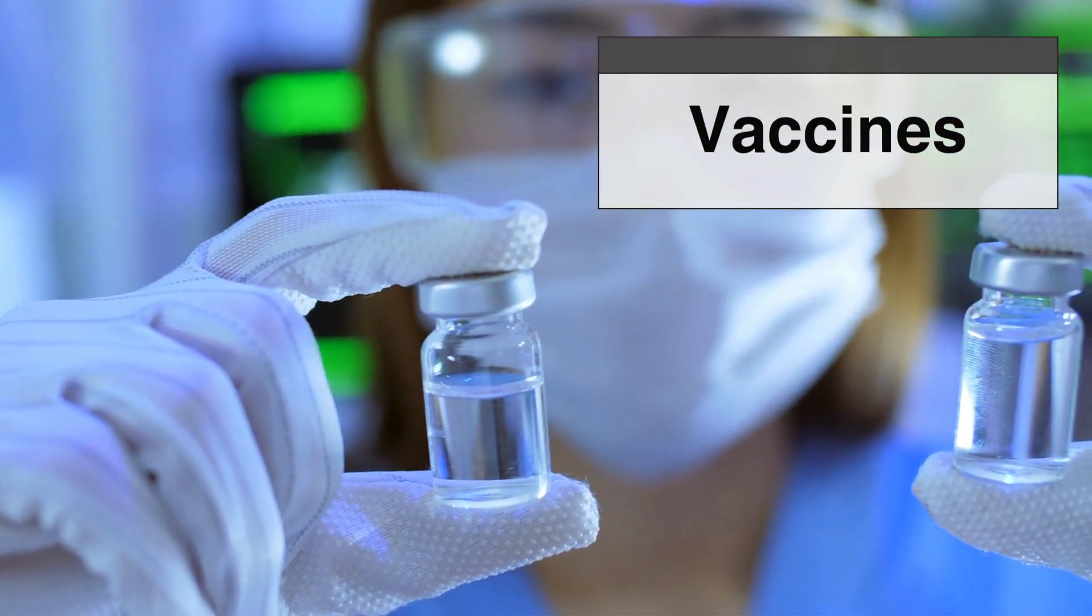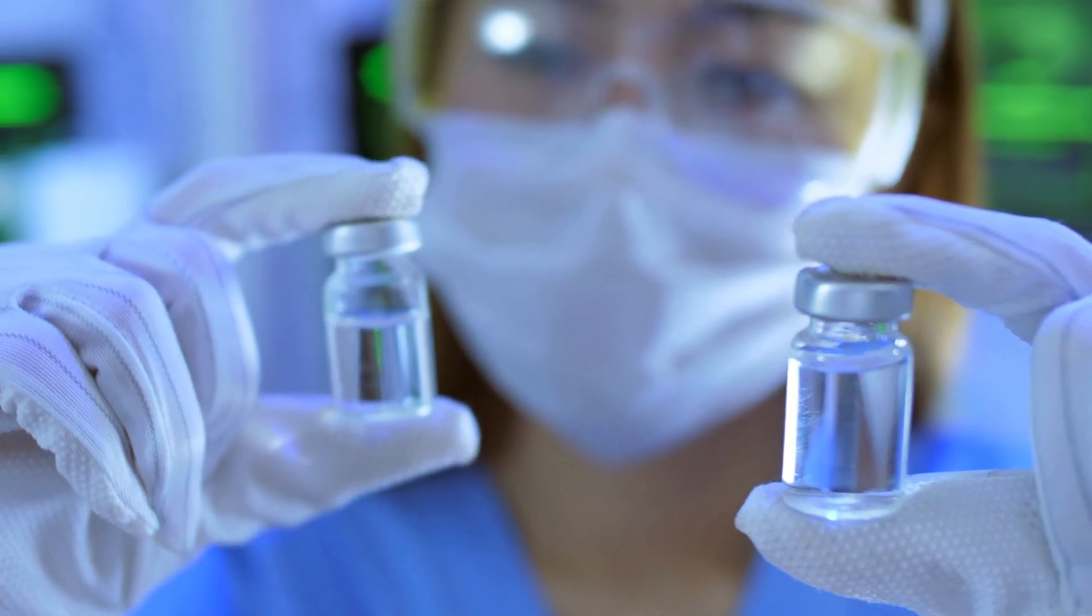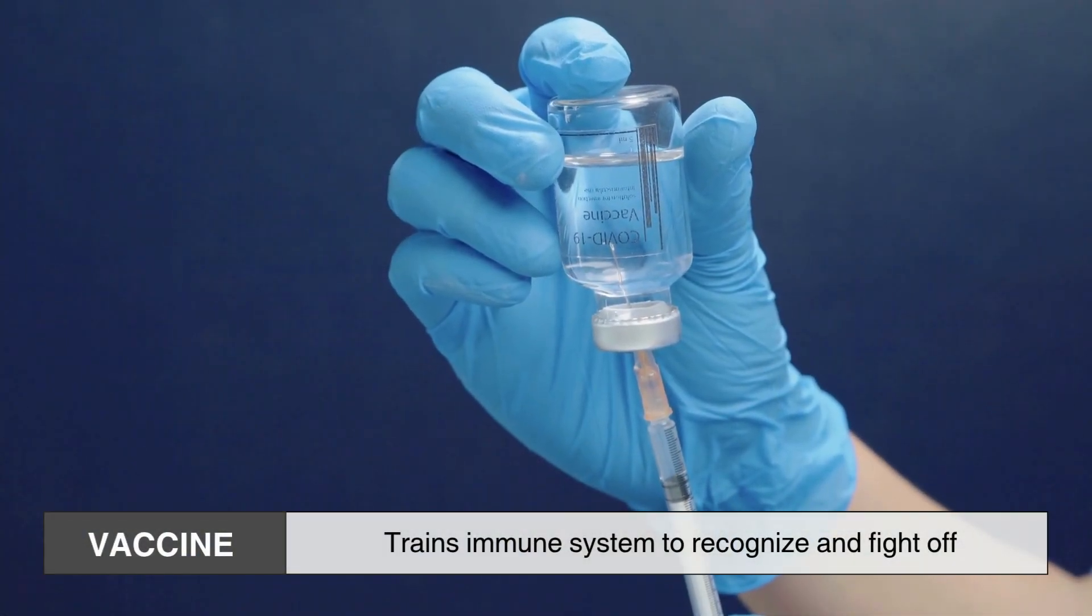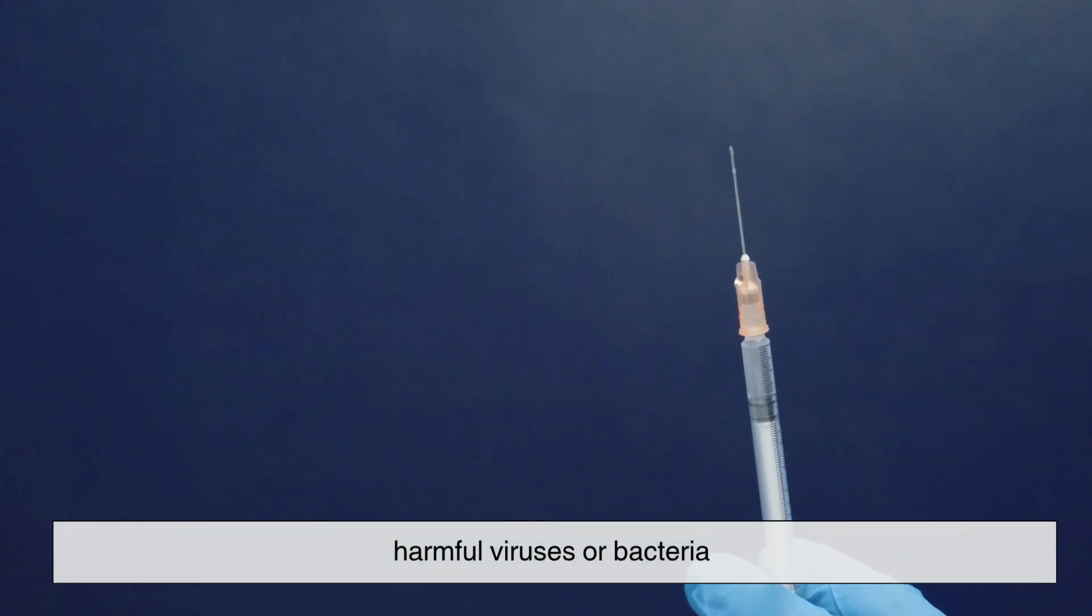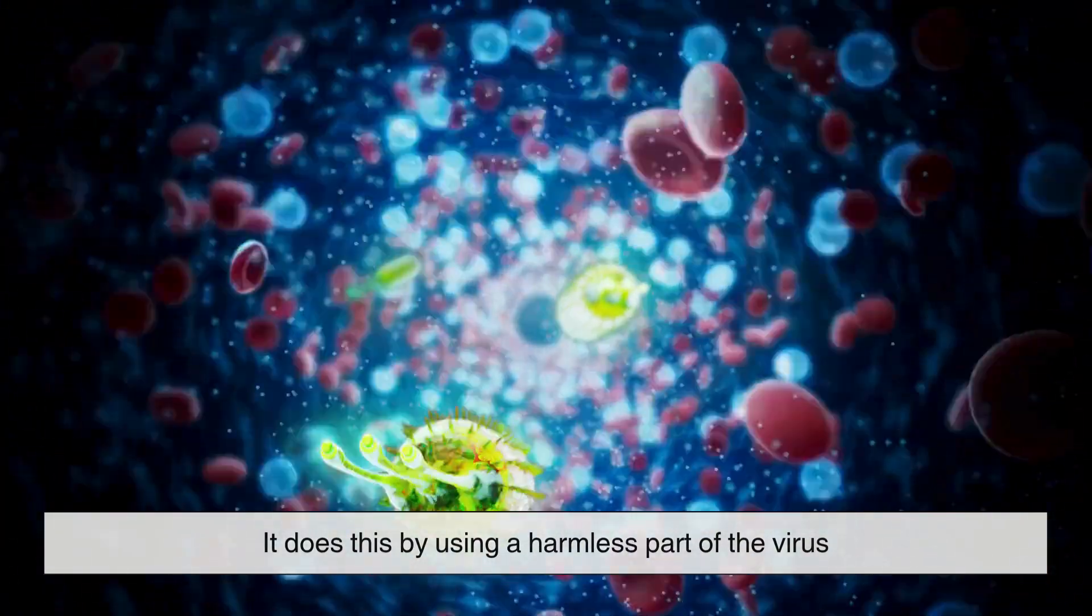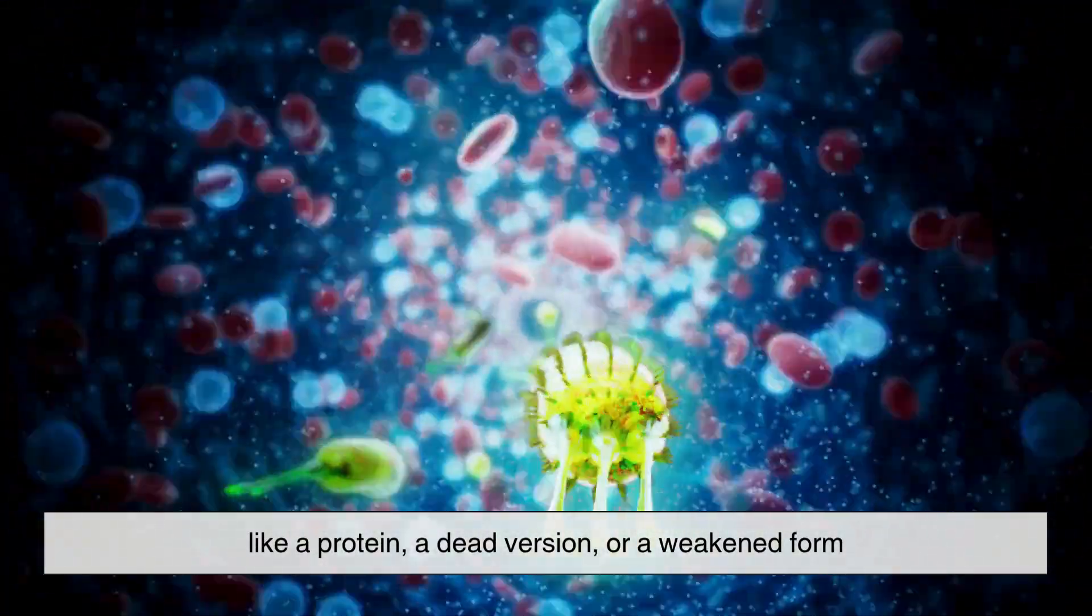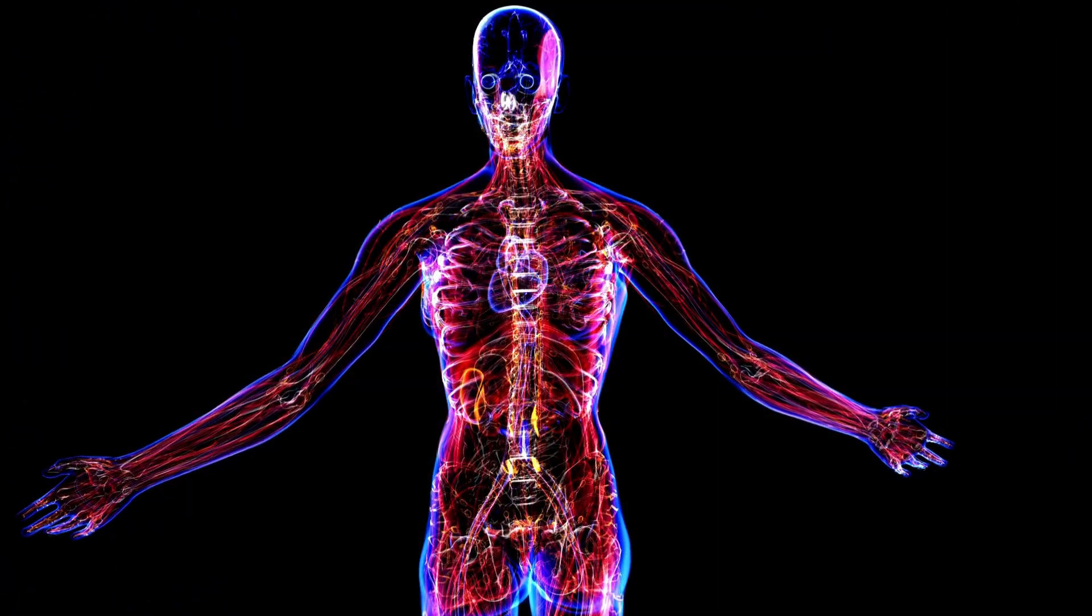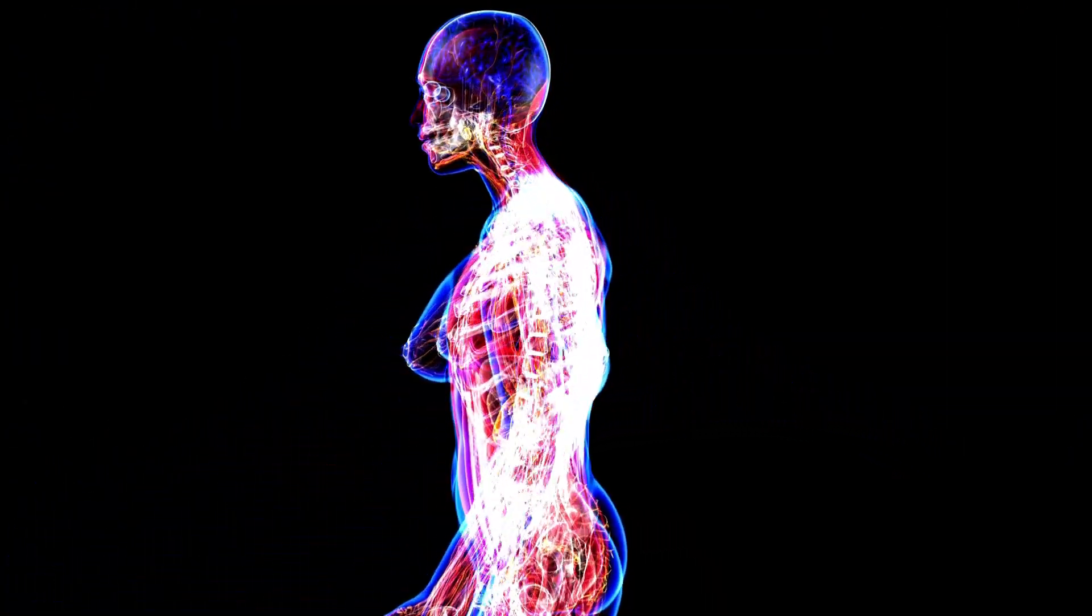To understand how vaccines are made, it helps to first know what they actually are. A vaccine trains your immune system to recognize and fight off harmful viruses or bacteria. It does this by using a harmless part of the virus, like a protein, a dead version, or a weakened form. This way, your body can build protection without you having to get sick first.